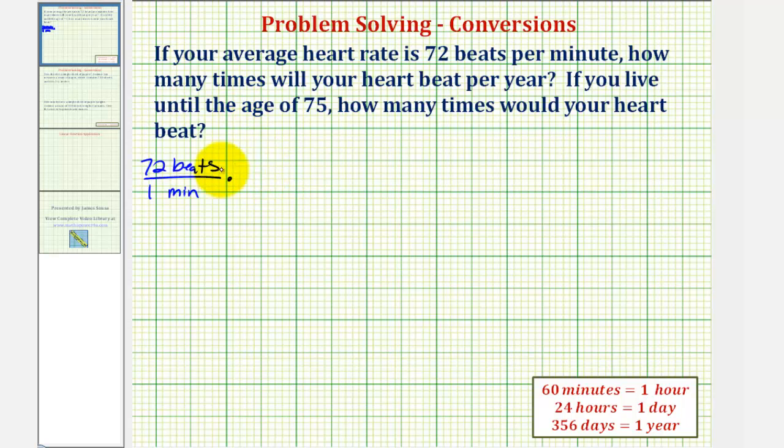So for the first unit fraction, we want to convert minutes to hours. Because we want minutes to simplify out, we have to have minutes in the numerator here, so that they would simplify with the minutes in the denominator. So we'll convert minutes to hours, and since 60 minutes is equal to one hour, our first unit fraction will be 60 minutes per one hour. Notice here, the units of minutes simplify out, therefore this product would give us the number of beats per hour.